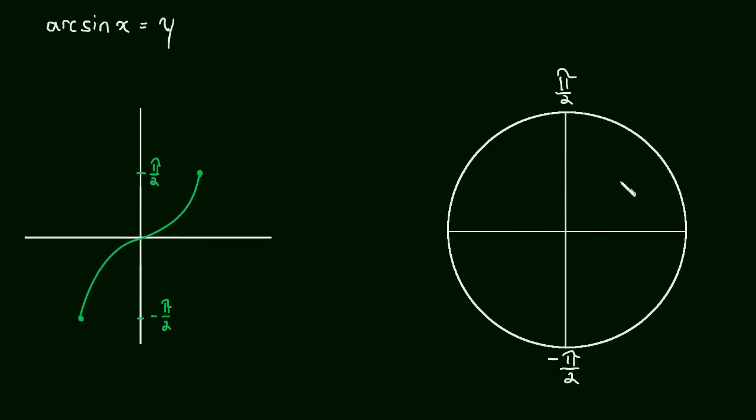So why do we only take the positive square root? Well, let's look at something here. This is the graph, a sketch of the graph, of the arc sine of x. We can see that arc sine of x equals y. The biggest y could ever be, or in other words, the highest the function ever goes is pi over 2, and the lowest is negative pi over 2. So we know the range of this function. Negative pi over 2 is less than or equal to y is less than or equal to pi over 2. So y is somewhere in between negative pi over 2 and pi over 2.